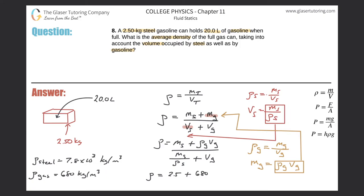I'm going to convert the volume from liters into cubic meters before plugging it in. There's always one extra step — you've got to be careful with units. So: 20 liters, converted first into milliliters using 1000 milliliters per liter. Then, since 1 milliliter equals 1 cubic centimeter, I get rid of milliliters and liters and I'm now in cubic centimeters.